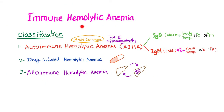Immune hemolytic anemia is classified into three subtypes. Autoimmune is by far the most common, with warm and cold subtypes. There is also drug-induced hemolytic anemia, which we have talked about. And now let's talk about alloimmune hemolytic anemia.